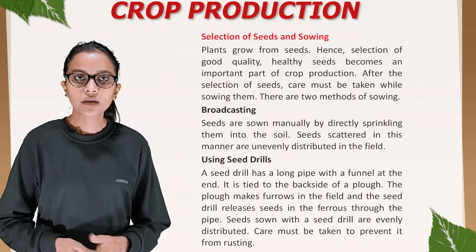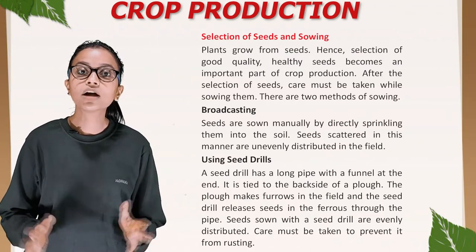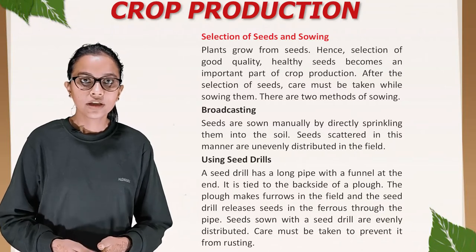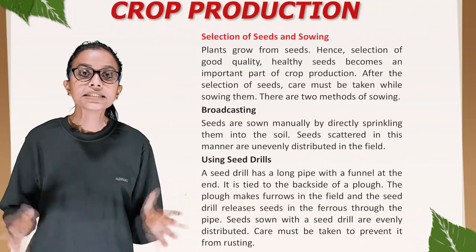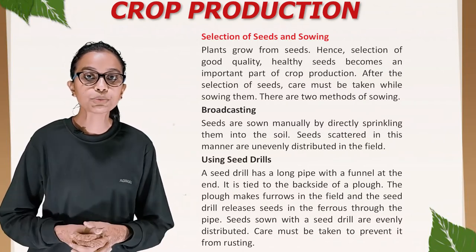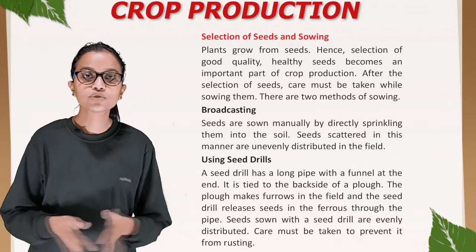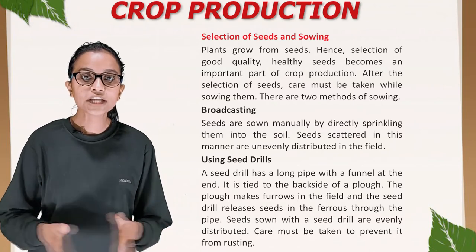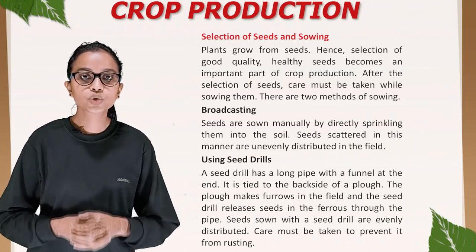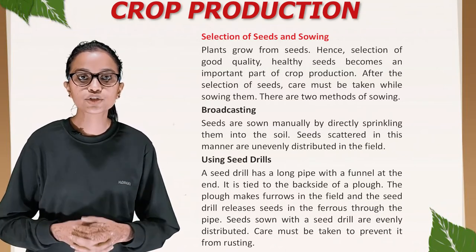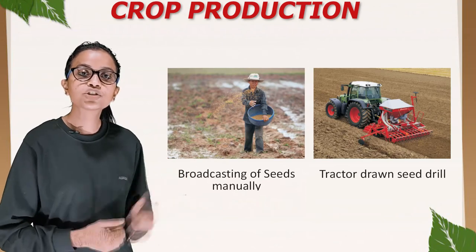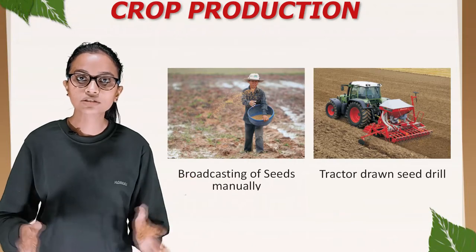Selection of seeds and sowing: plants grow from seeds, so selection of good quality, healthy seeds is an important part of crop production. There are two methods of sowing. Broadcasting: seeds are sown manually by directly sprinkling them into the soil; seeds scattered this way are unevenly distributed. Using a seed drill: a seed drill has a long pipe with a funnel at the end, tied to the back of a plow. The plow makes furrows and the seed drill releases seeds through the pipe evenly. The first picture shows broadcasting of seeds manually, and the second shows a tractor-drawn seed drill.